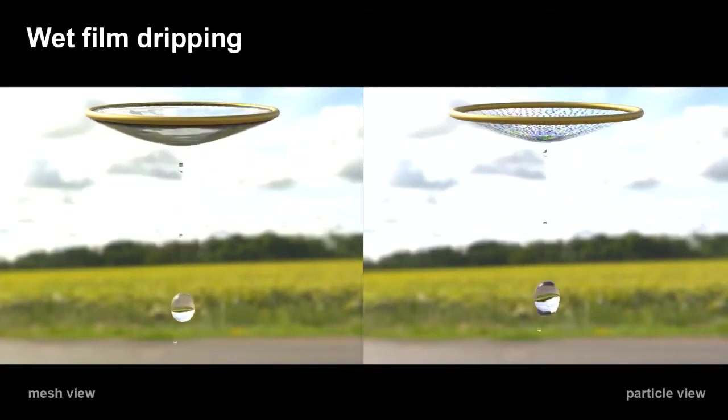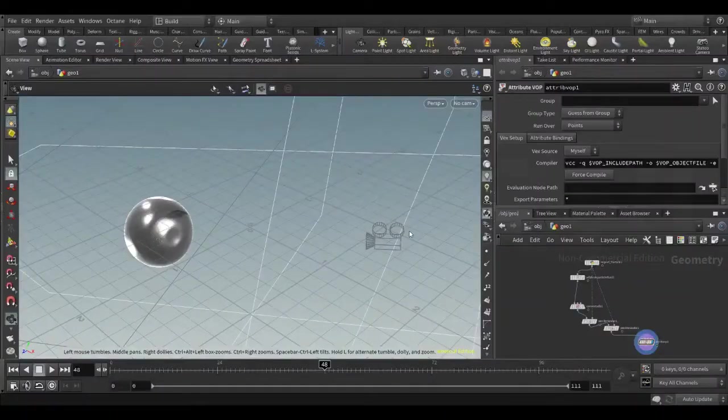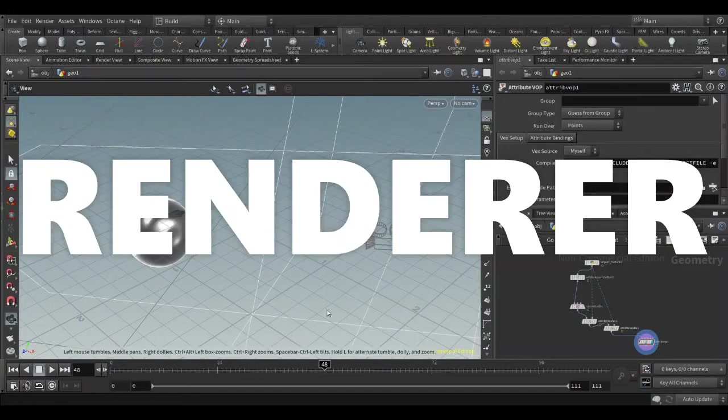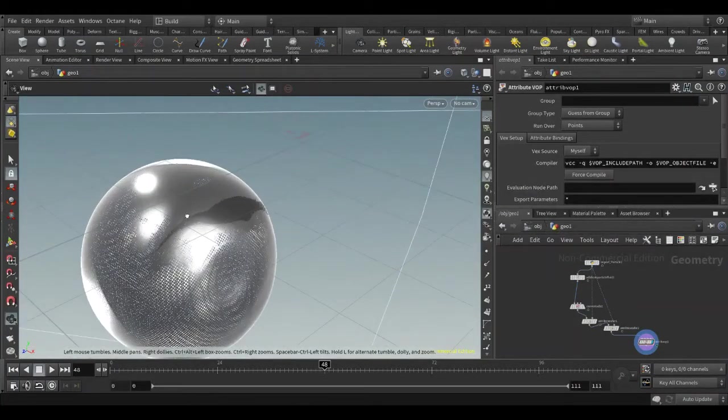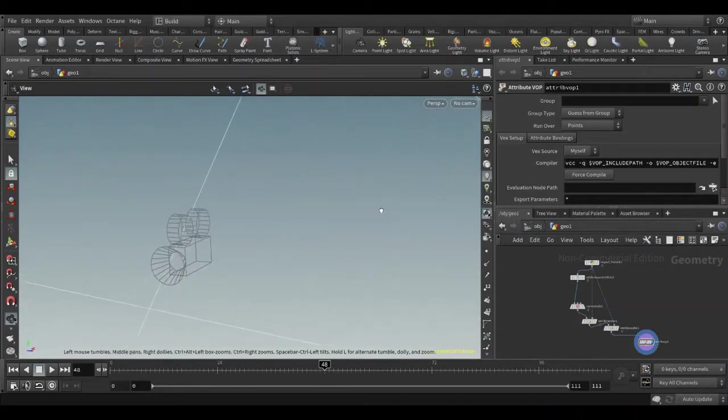To do this, we use a piece of software known as a renderer. We feed the renderer the description of a scene, with all the geometries, materials, lighting, objects, everything defined.